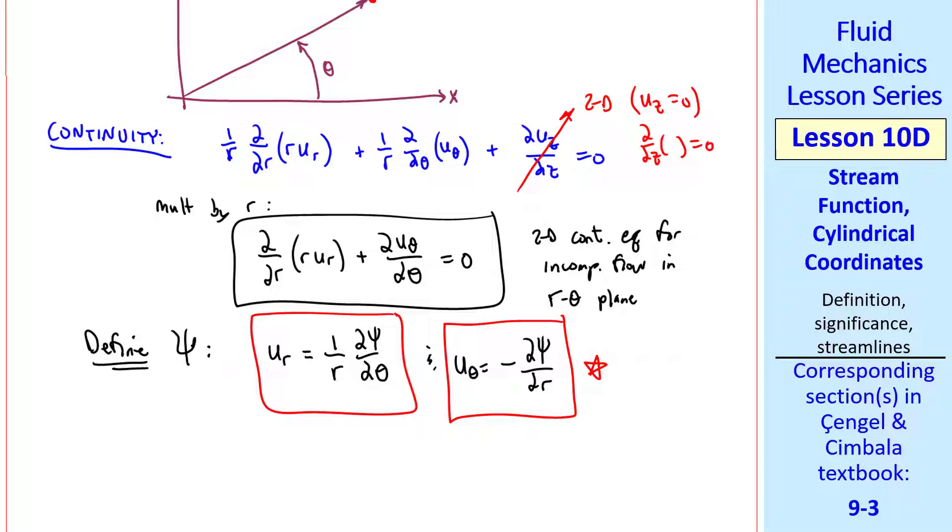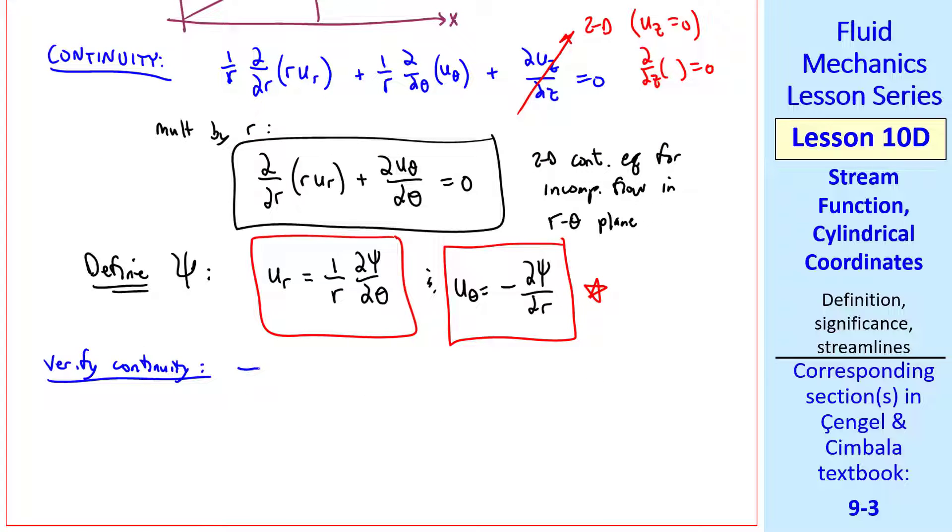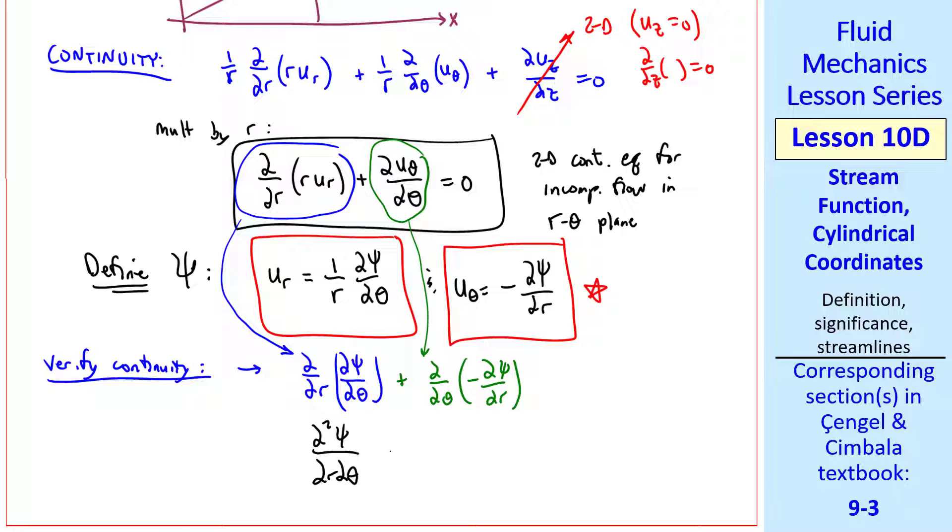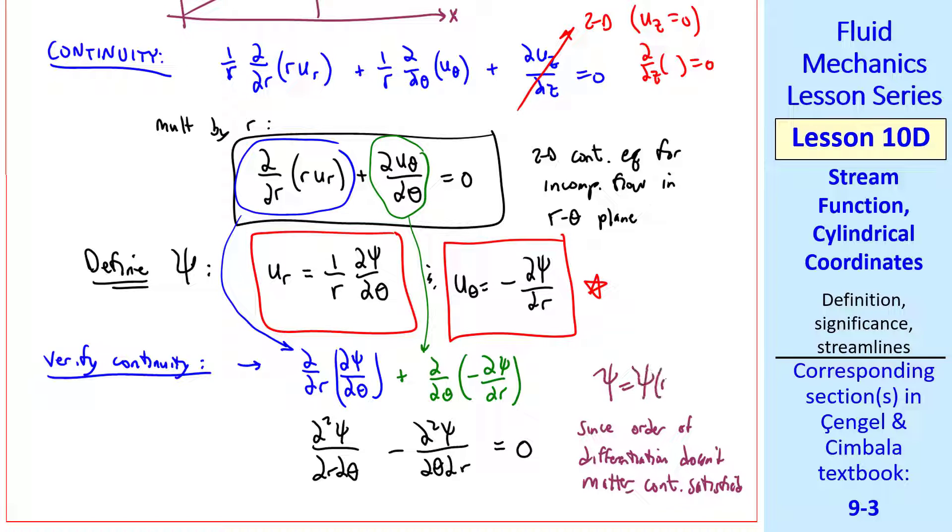This is our definition of the stream function in terms of derivatives. Let's verify that this makes the continuity equation hold. The first term yields del del R of del psi del theta, since the 1 over R here cancels this R here. The second term gives us del del theta of negative del psi del R, which we rewrite as del squared psi del R del theta minus del squared psi del theta del R equals zero. And for a smooth continuous function psi equals psi of R and theta, the order of differentiation shouldn't matter, so these two terms cancel and continuity is exactly satisfied. This is true for any smooth continuous function psi of R and theta.